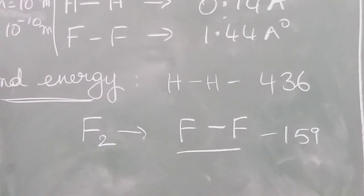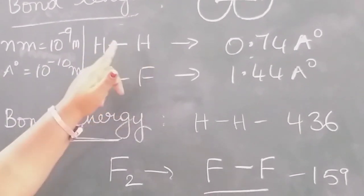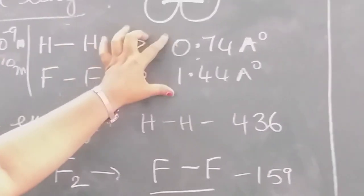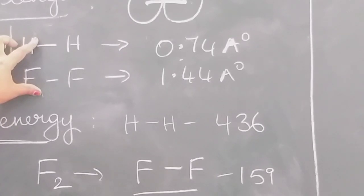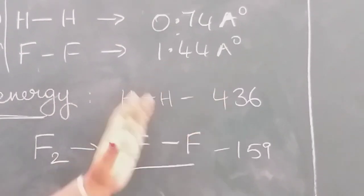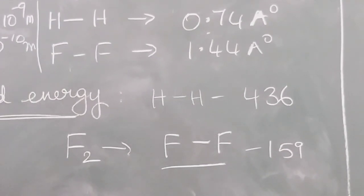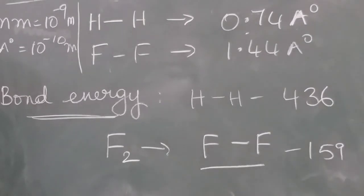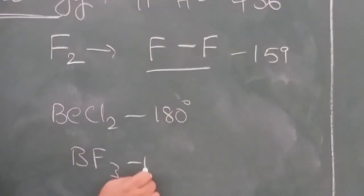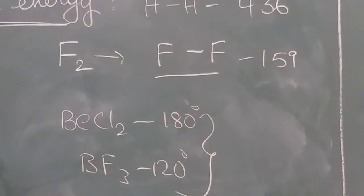This theory could not explain why the bond energy values are different. Between hydrogen and hydrogen there is a single bond, and between fluorine and fluorine there is also a single bond, but this theory could not explain why the bond energies are different when the same number of electrons are shared. Similarly, bond length and bond energy concepts could not be explained by this electronic theory of valence. Also, bond angles like BeCl2 at 180 degrees and BF3 at 120 degrees could not be explained — these are the main drawbacks of this theory.